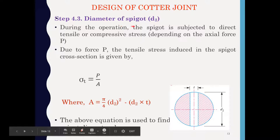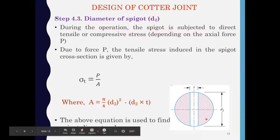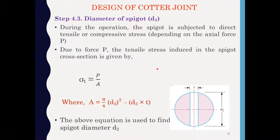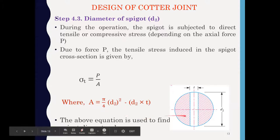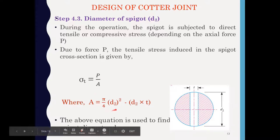Step 4.3: Outer diameter of the spigot D2. In the cross-sectional view of the spigot, D2 is the outer diameter and T is the thickness of the slot. The spigot end is also subjected to tensile failure, so the formula is sigma_t = P / A, where the resisting area A = (π/4) × D2² − D2 × T. Having calculated T in the previous step, we put in the values to find D2.